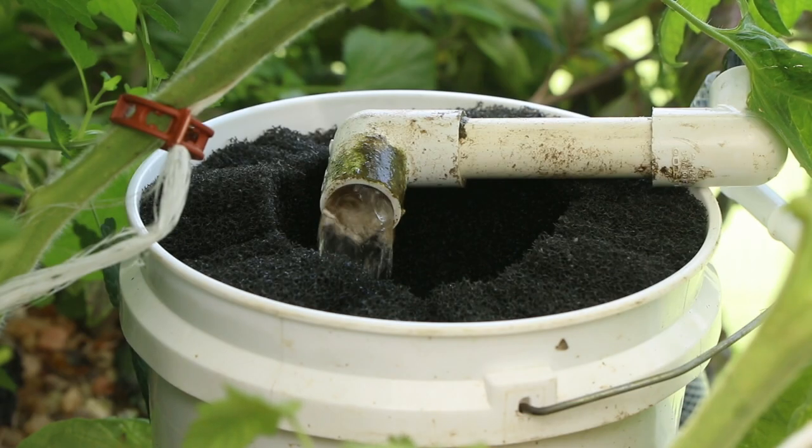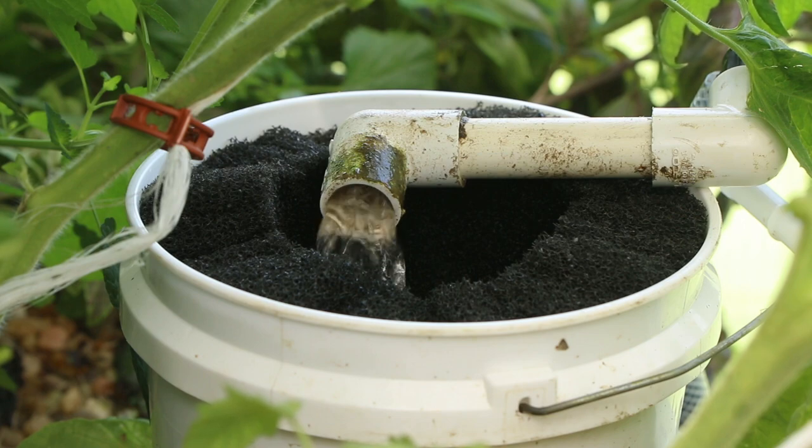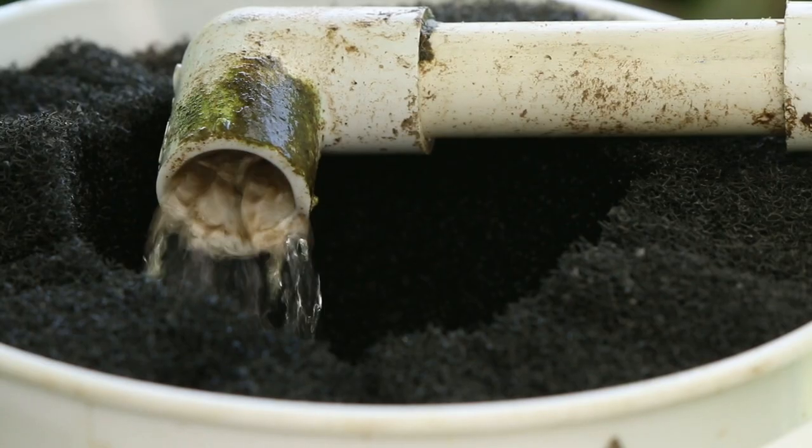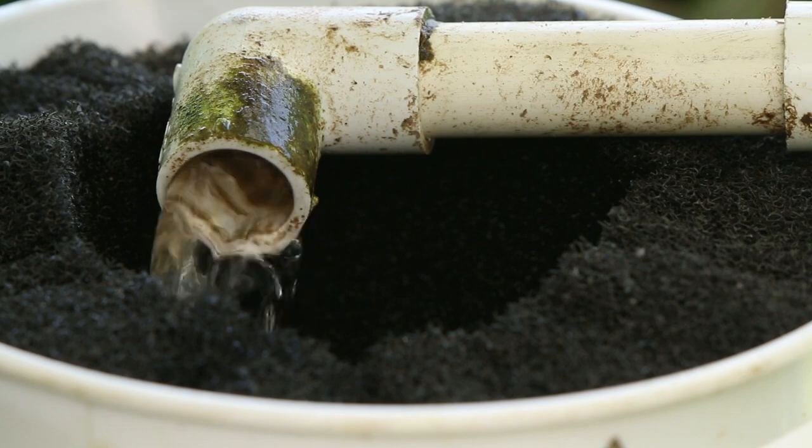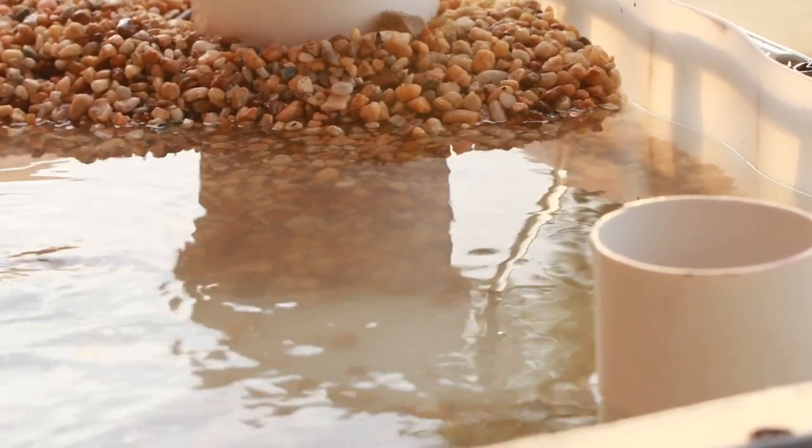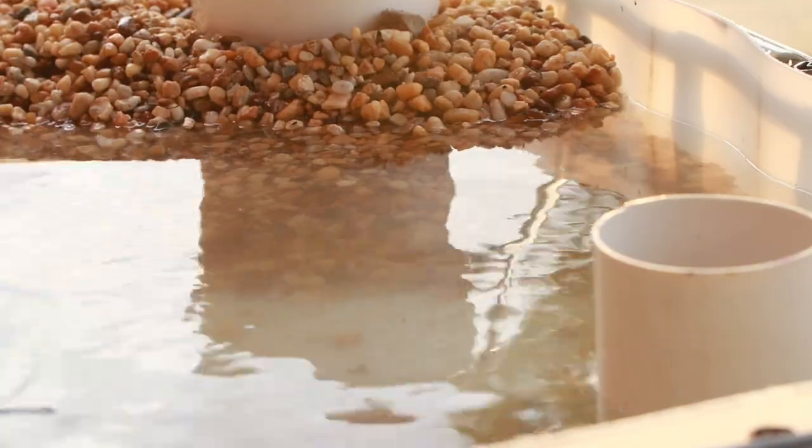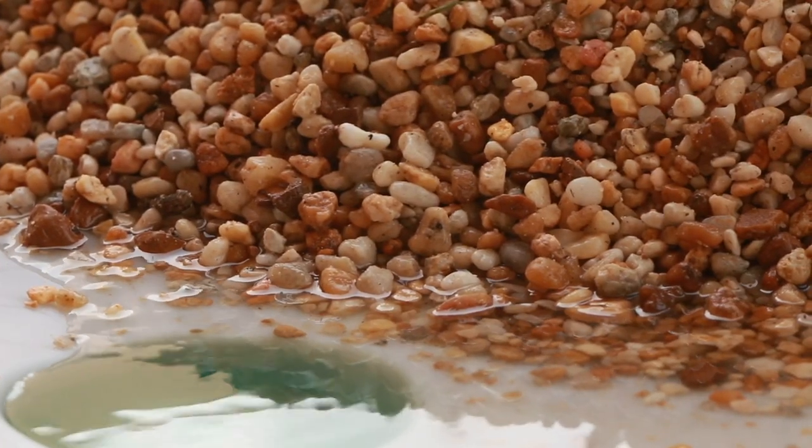Using a pre-filter between the fish tank and the grow bed will help prevent solid fish waste and other particles from clogging up the growing media, which can cause channeling and result in uneven water distribution. If the media gets too clogged, it must be removed and cleaned.